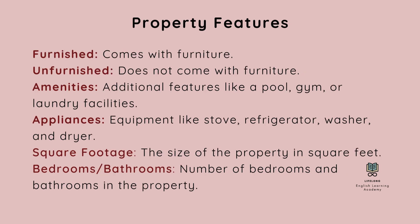You also need to know some property features. Furnished: comes with furniture. Unfurnished: does not come with furniture. Amenities: additional features like a pool, gym, or laundry facilities. Appliances: equipment like stove, refrigerator, washer, and dryer. Square footage: the size of the property in square feet. Bedrooms and bathrooms: number of bedrooms and bathrooms in the property.